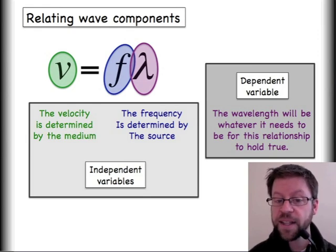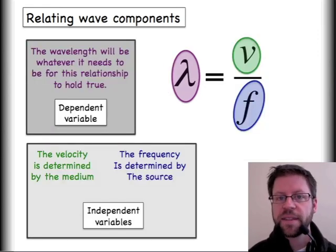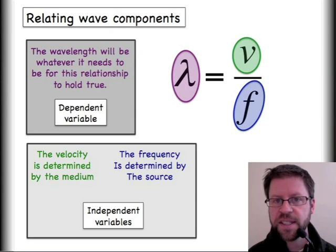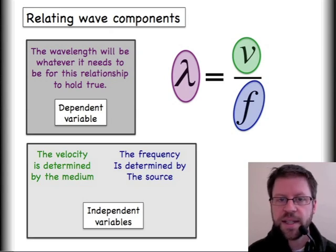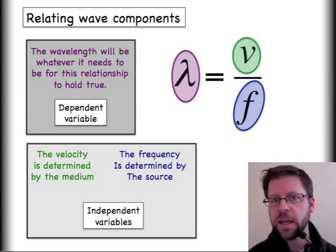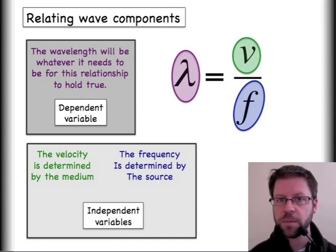In a sense, these are the independent variables for this particular equation. However, I have identified that velocity is determined by the medium, frequency is determined by the source. That's why you will sometimes see the same equation written like this. This is more standard mathematically to have our dependent variable written on the left and our independent variables on the right.